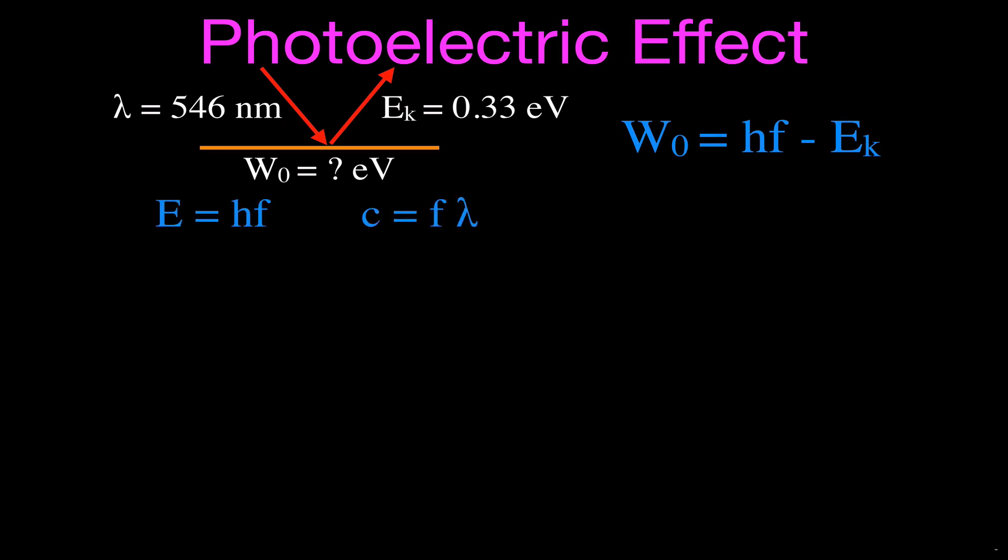We are going to use these two equations again, the energy equal to h times f, Planck's constant times the frequency, and the speed of light in a vacuum 3.0 times 10 to the eighth meters per second is equal to the frequency times the wavelength. This is lambda, the Greek letter lambda, and this is the symbol for the wavelength.